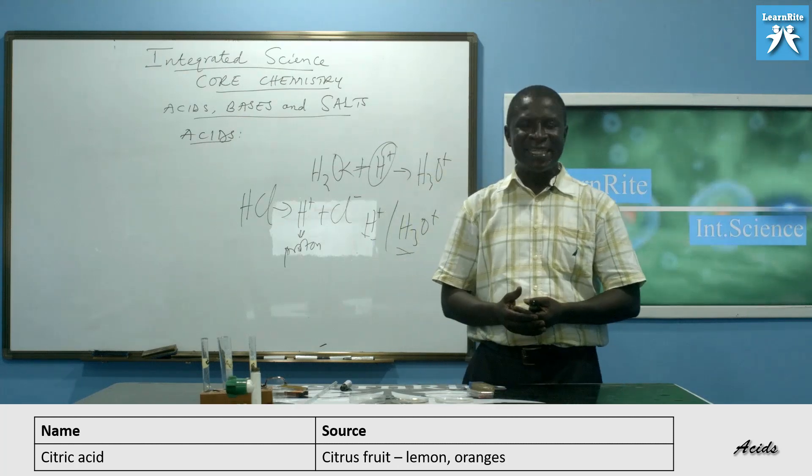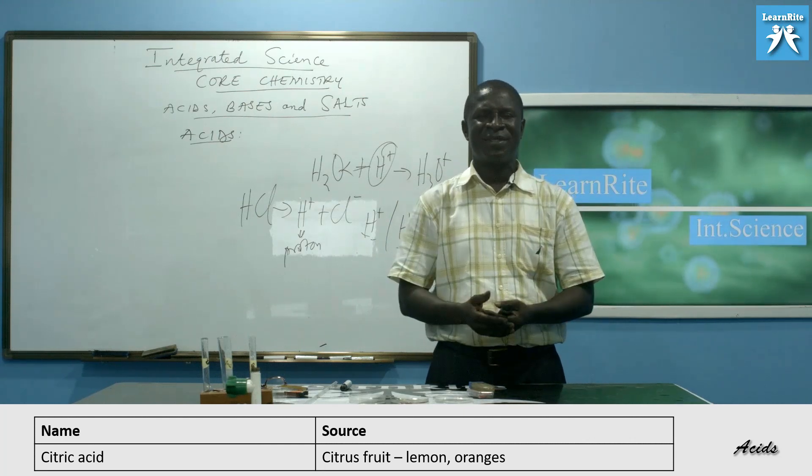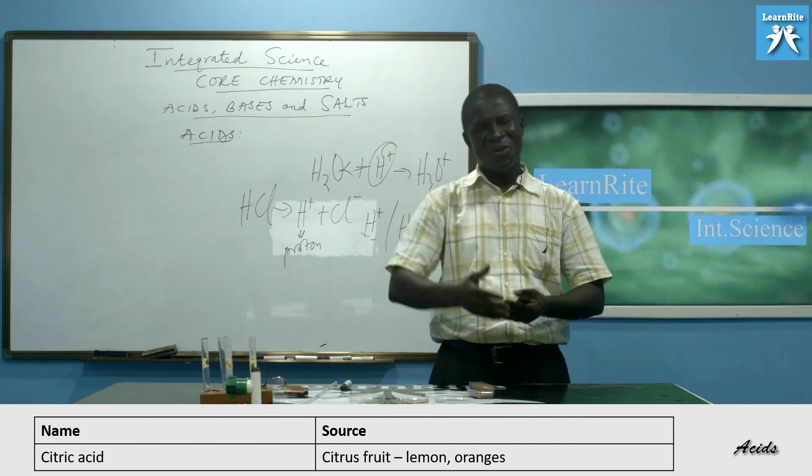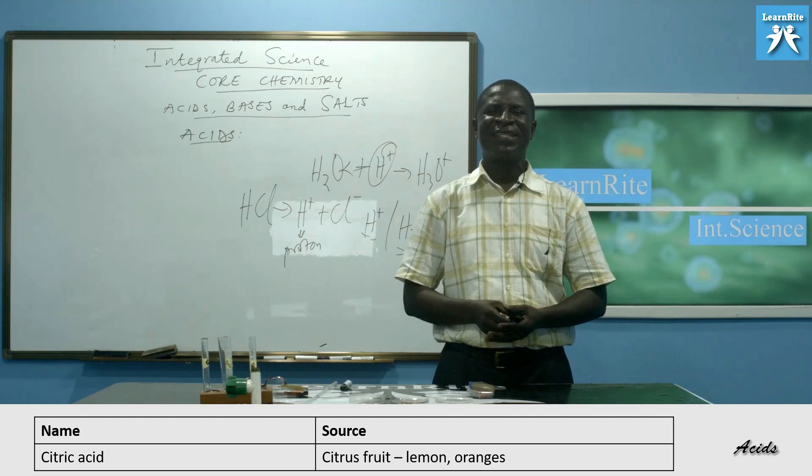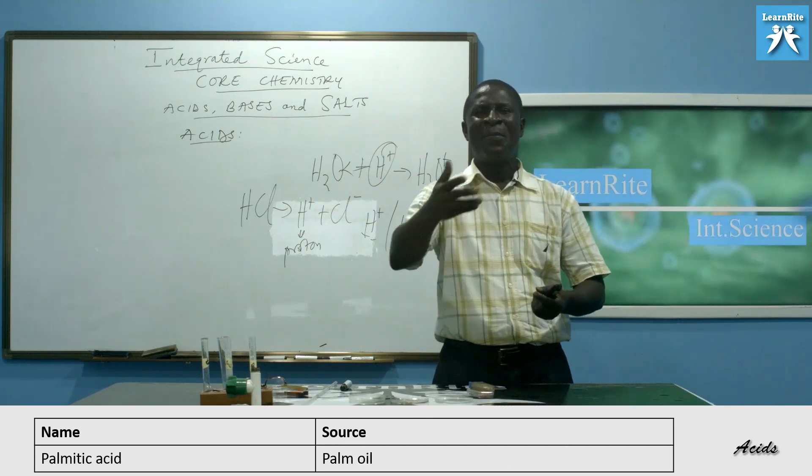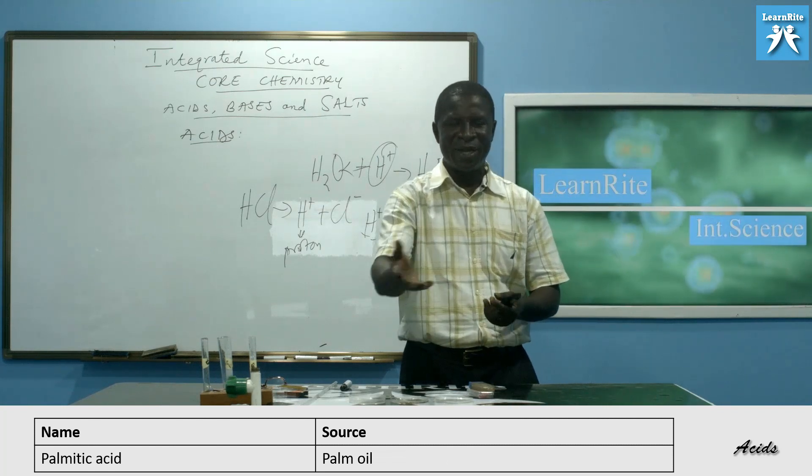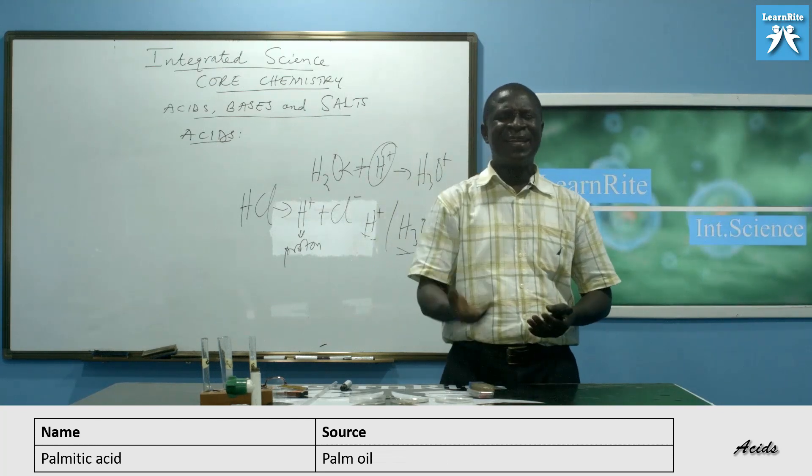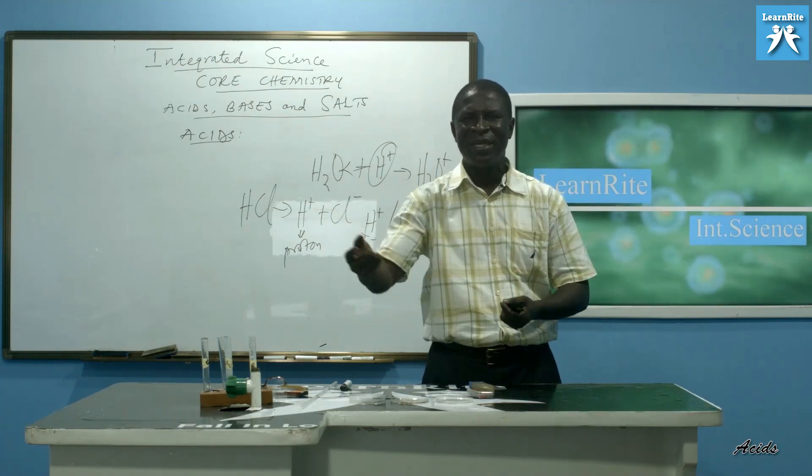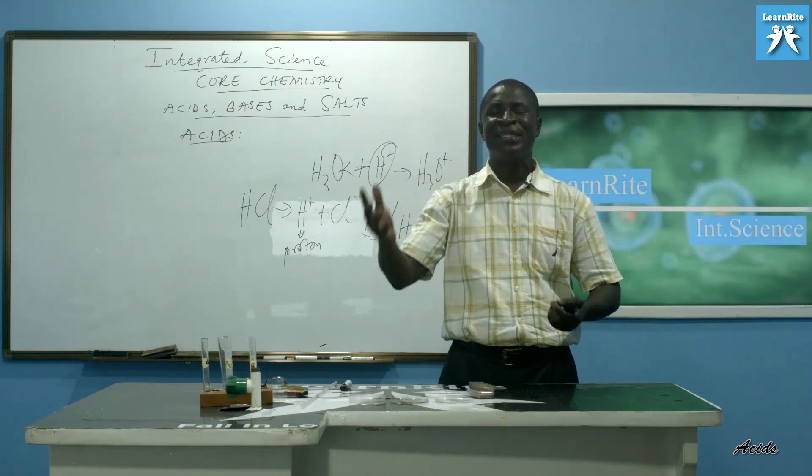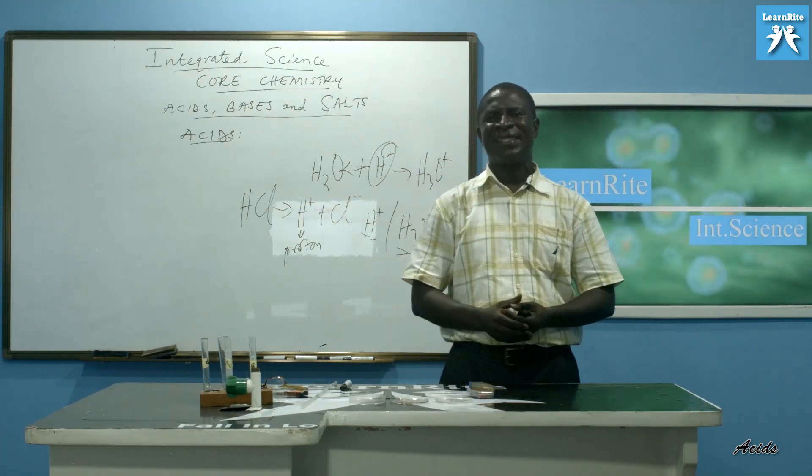Then we have citric acid also, which is also an organic acid. We get it from citrus fruits. Name them. We have lemon, we have oranges. This is where we get this natural acid from. We have palmitic acid. We get it from palm oil. We all know the red oil called palm oil. There are others like tartaric acid, butanoic acid from goat meat and those things. Plenty. We cannot list them here. So this is just a few to show to you what organic acids are.